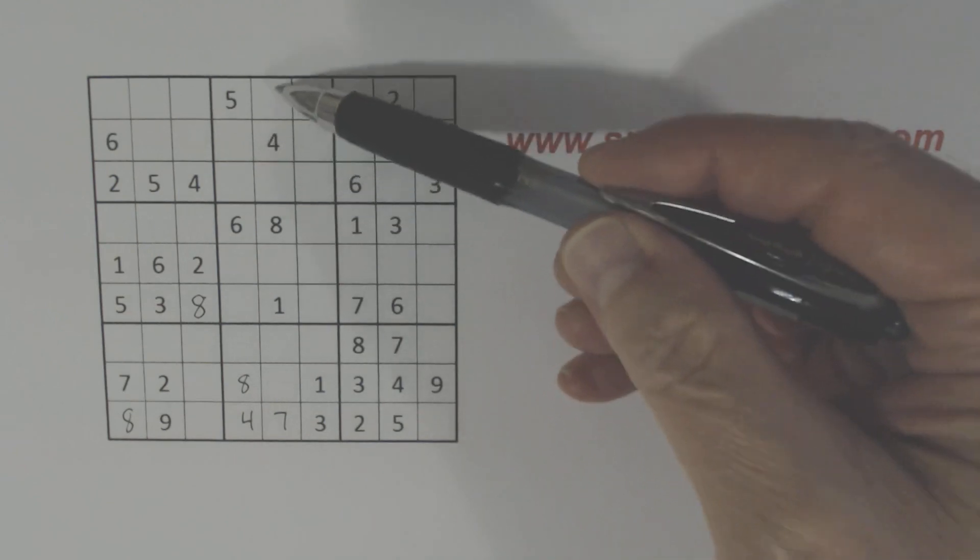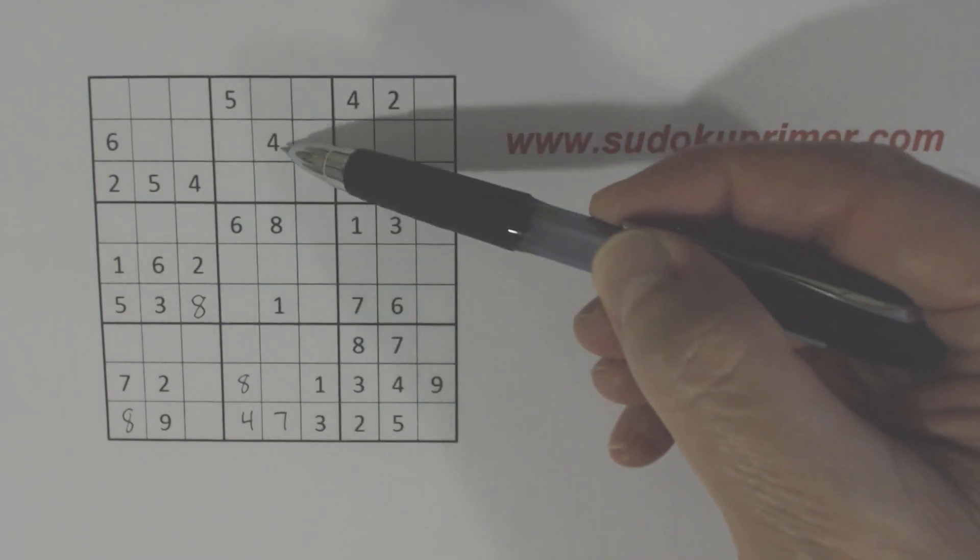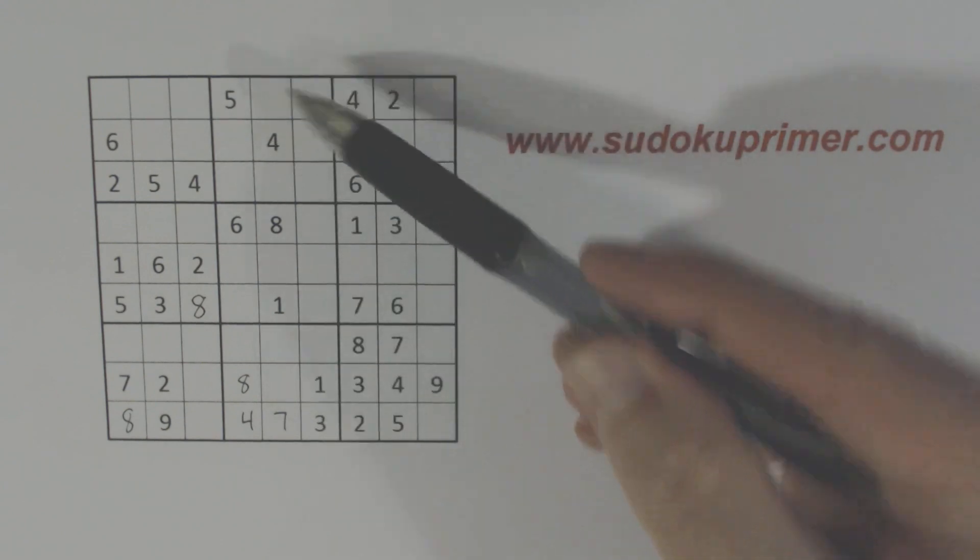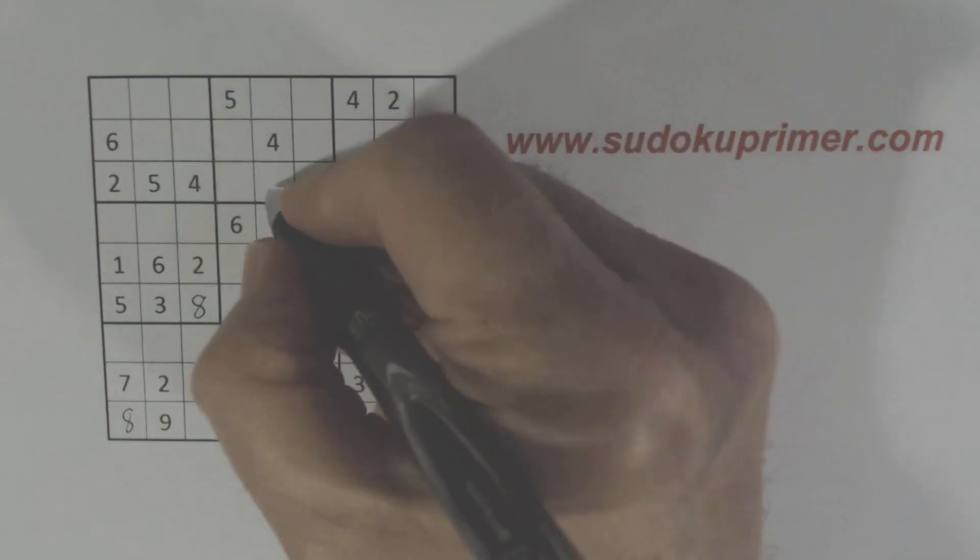Let's look at this column right here. We're missing 2, 3, 5, 6, 9. And we've got a 2, 3, 5, and 6 there. So we can put a 9 there.